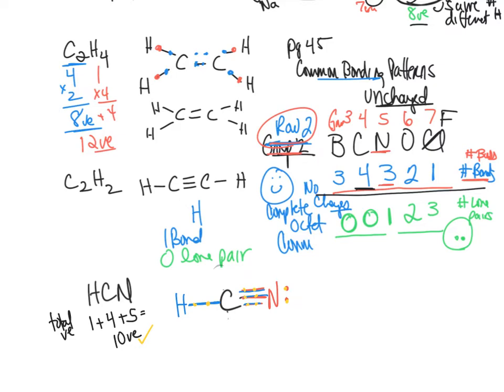Checking: hydrogen has two electrons — that completes its octet. Carbon has eight — complete octet. Nitrogen has eight — complete octet. So each of these elements has a complete octet, and we've used exactly 10 total valence electrons. You always want to check this. The bonding pattern makes things a lot simpler.